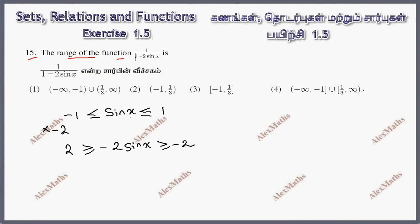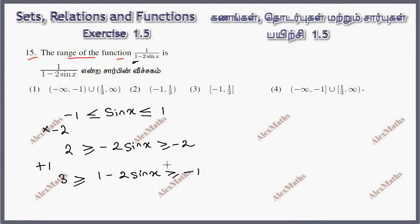Now we add 1 to get 1 minus 2 sin x. Adding 1 throughout gives us the bounds of 1 minus 2 sin x. The minimum value becomes minus 1 and the expression 1 minus 2 sin x is bounded accordingly, giving a minimum of minus 1.